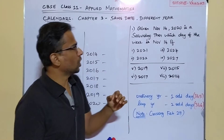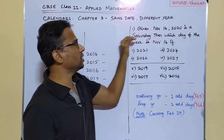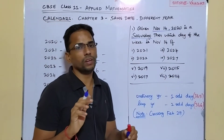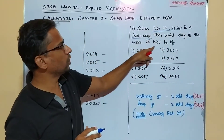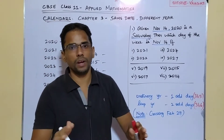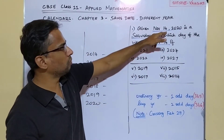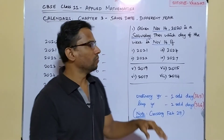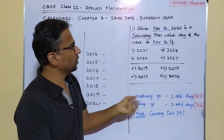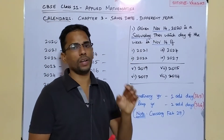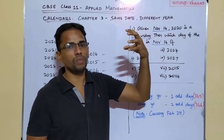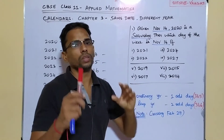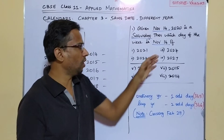We will get into the question first. Our question is: given November 14 of 2020 is a Saturday, which day of the week is the same November 14 going to be for different years? Remember, we have the same date — November 14 — and we are asked to find the day for different years. For all these different years we have to find that is our assigned task for this session.